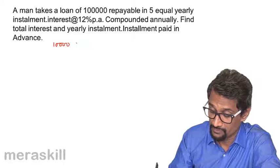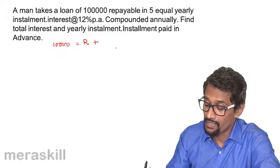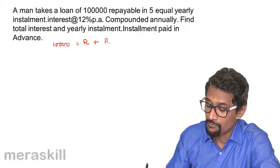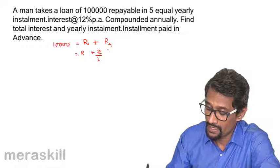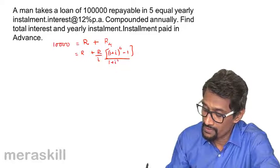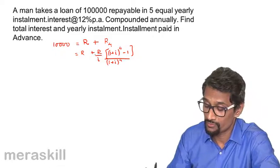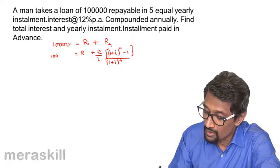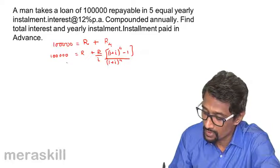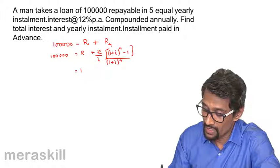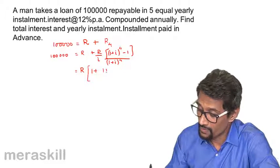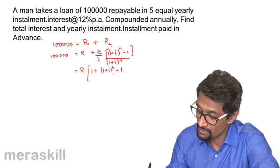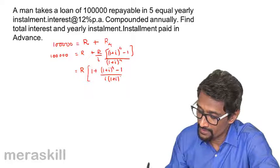We can form the equation: 100,000 is equal to R plus R for 4 years. So this is going to be R plus R by i into (1 plus i) raised to 4 minus 1, upon (1 plus i) raised to 4. Picking out R common, this becomes R into 1 plus [(1 plus i) raised to 4 minus 1] upon [i into (1 plus i) raised to 4].